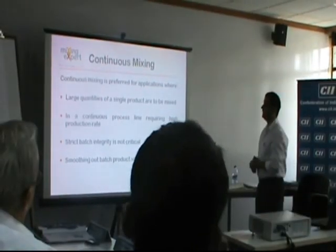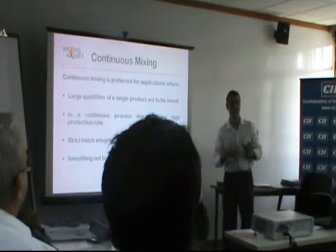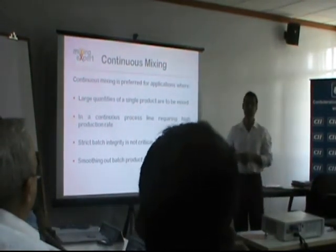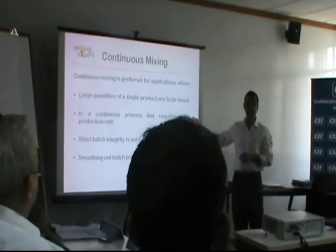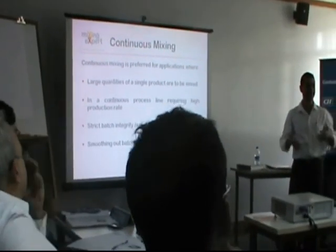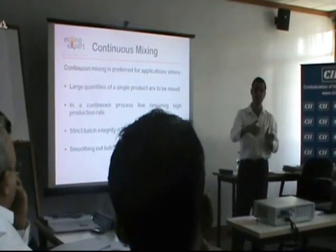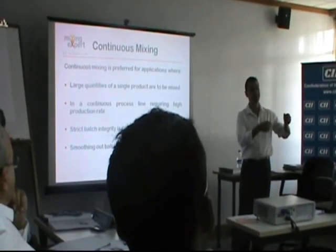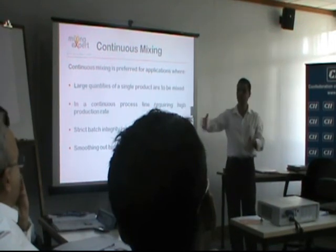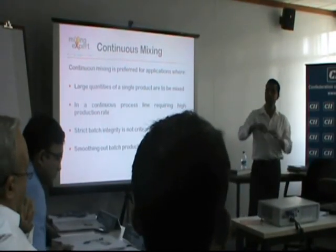Continuous mixing is used where we have large quantities of a single product — tons per day or per hour — and where high production rate requirements exist and strict batch integrity is not critical, allowing some variation. It is also used where you have multiples of batch mixers and want to make a final homogeneous mass out of those batches — for example, when shipping one container load of a particular material, a continuous mixer can be used to even out the variation between those batches.